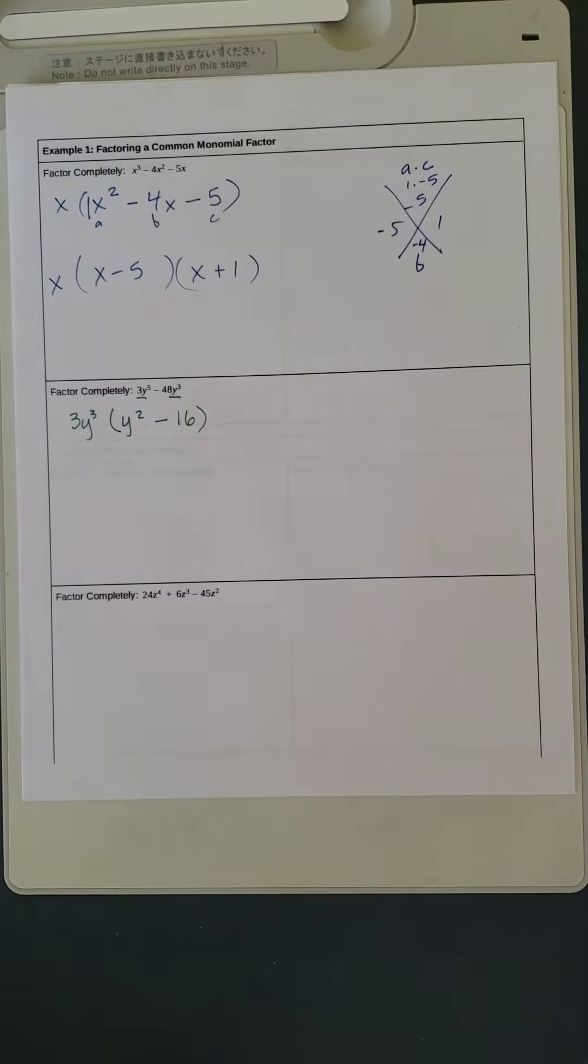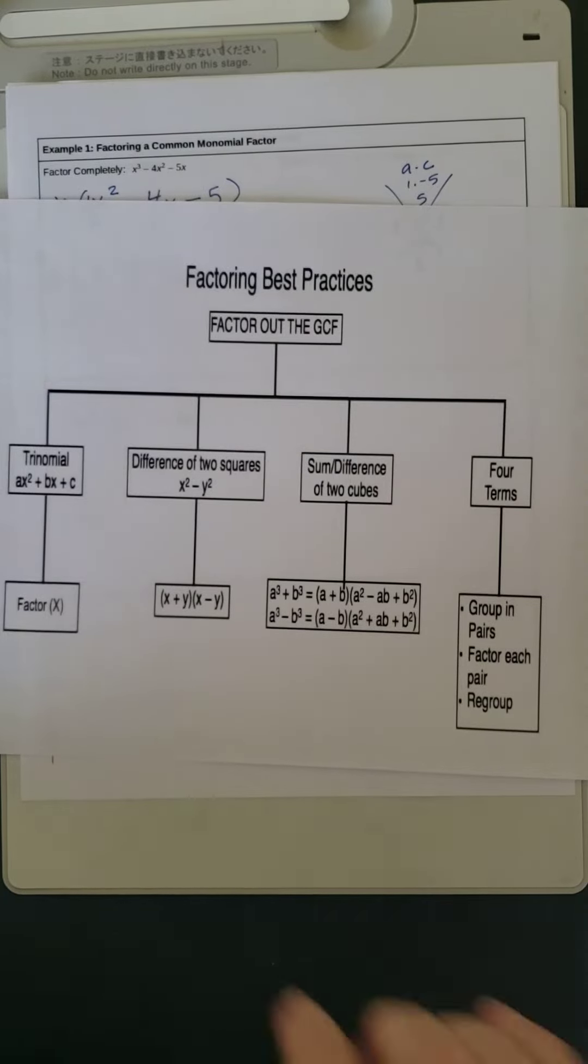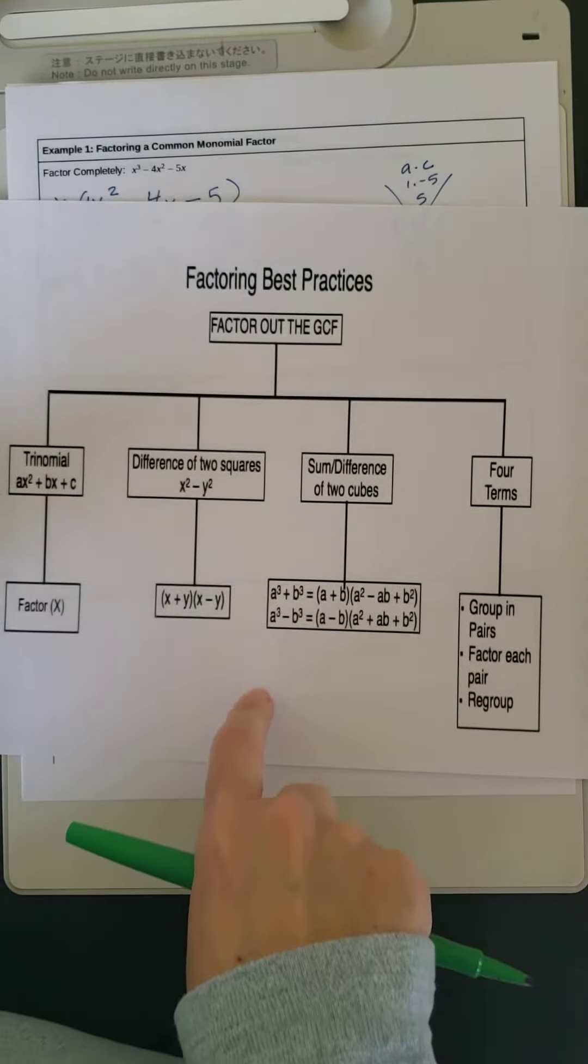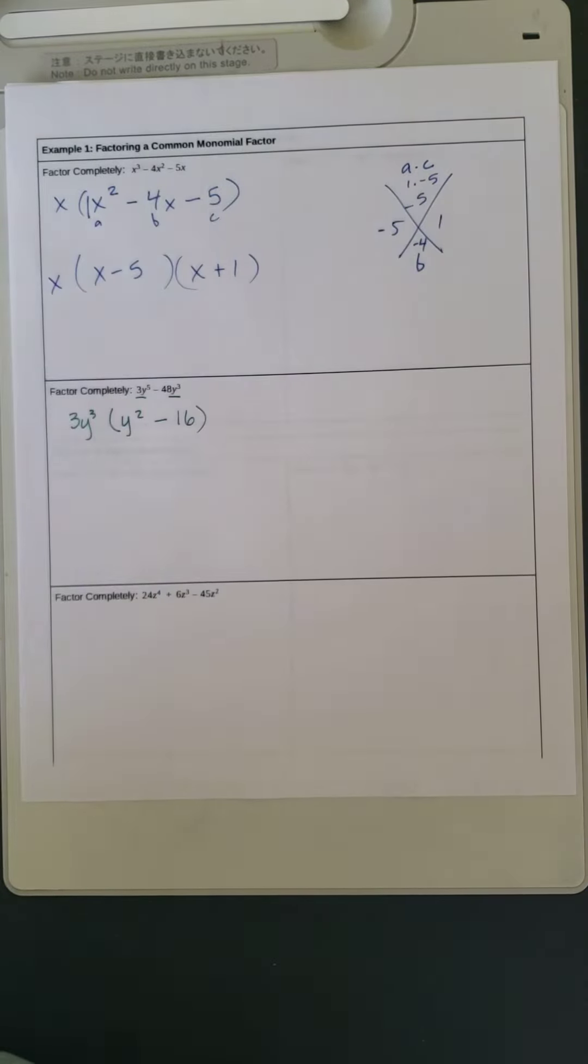So we have two terms. We need to look at our sheet and determine whether it's a difference of squares or a sum or difference of cubes. Since we have things raised to the 2nd power, we're going to assume that it's a difference of cubes.